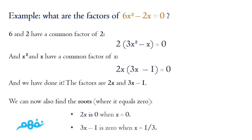So 2x(3x minus 1) equals 0 is the simplest form of the equation. From here we can find the values of x that make the equation equal zero. Since the right-hand side is 0, one or both factors must be 0. First, 2x equals 0 when x equals 0. And 3x minus 1 equals 0 when x equals 1/3. These are the two roots of the equation — the values that make the function equal zero.